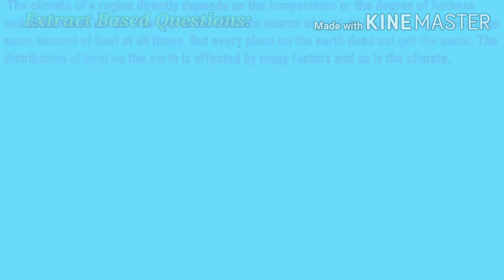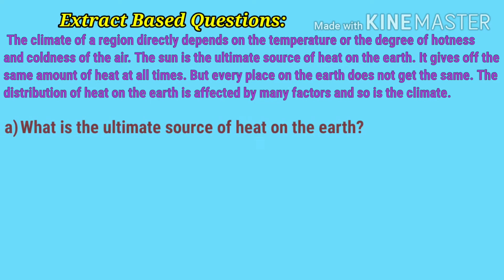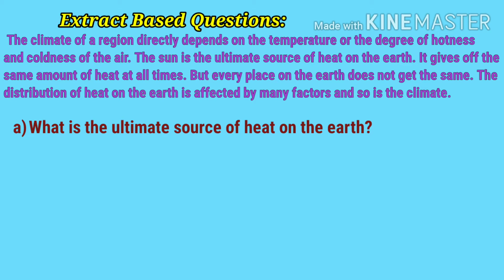Now we'll do some extract-based questions. The extract from the chapter reads: the climate of a region directly depends on the temperature, or the degree of hotness and coldness of the air. The sun is the ultimate source of heat on the earth. It gives off the same amount of heat at all times, but every place on the earth does not get the same. The distribution of heat on the earth is affected by many factors and so is the climate. Question number one: what is the ultimate source of heat on the earth? The sun is the ultimate source of energy.